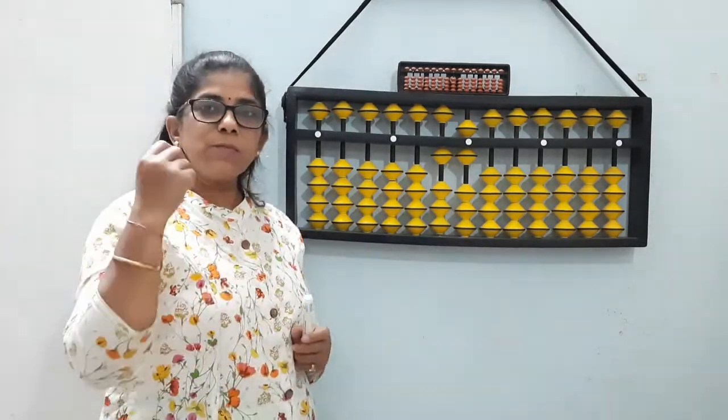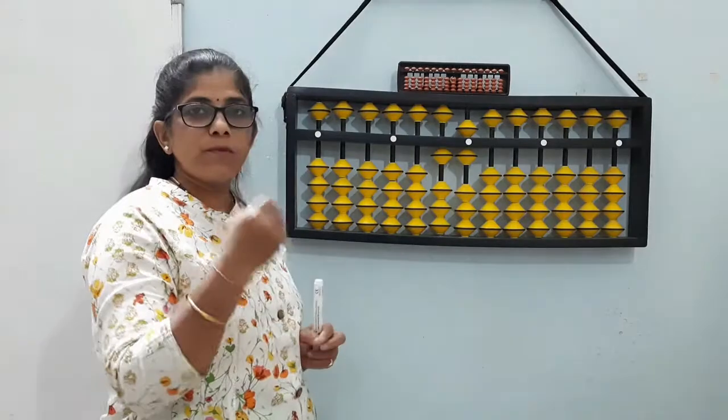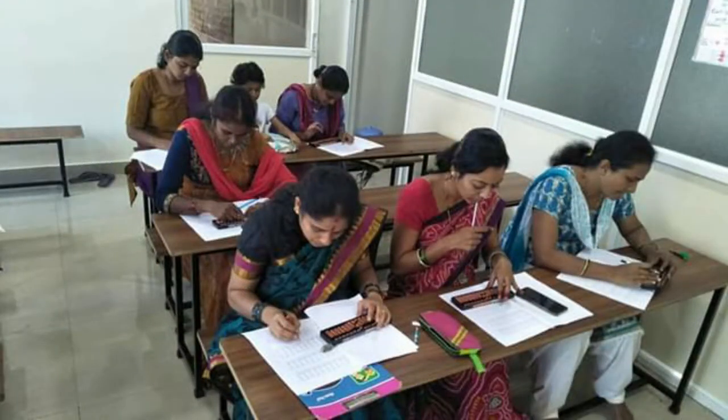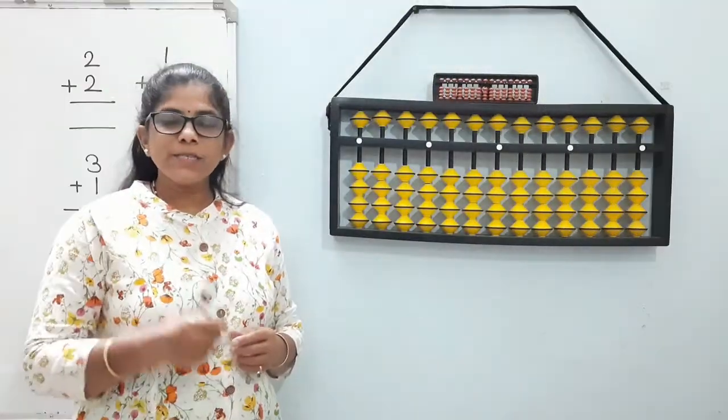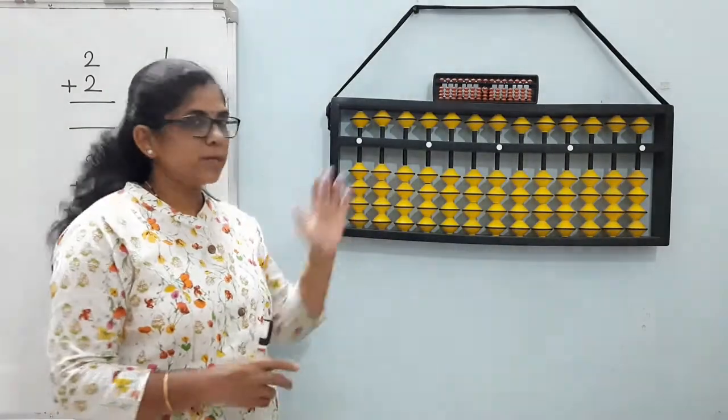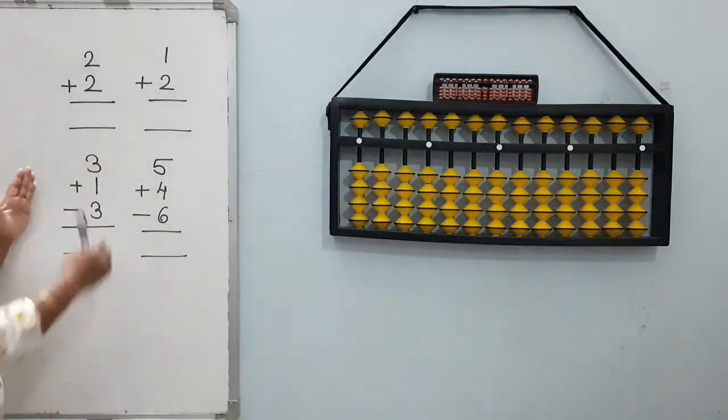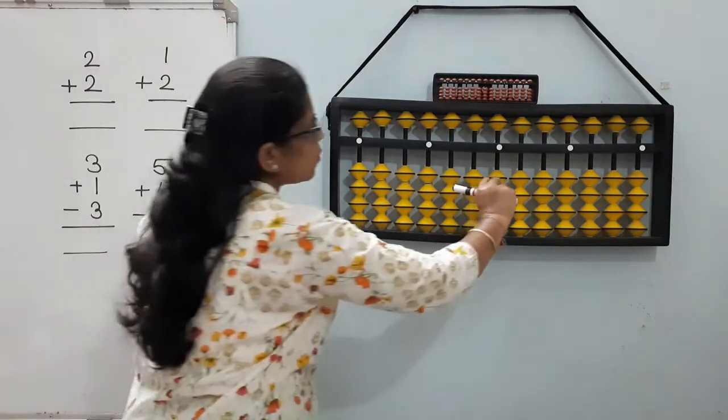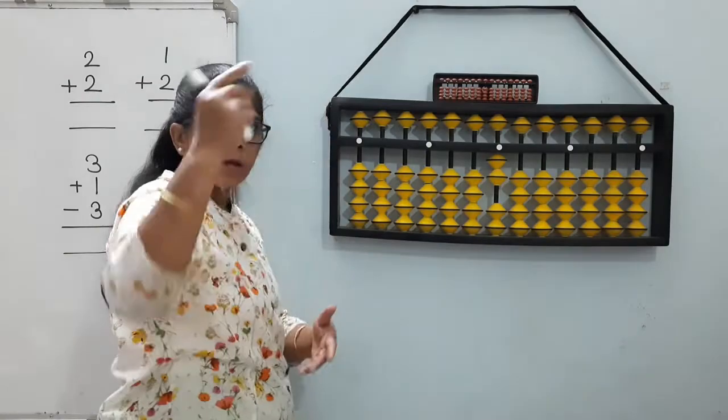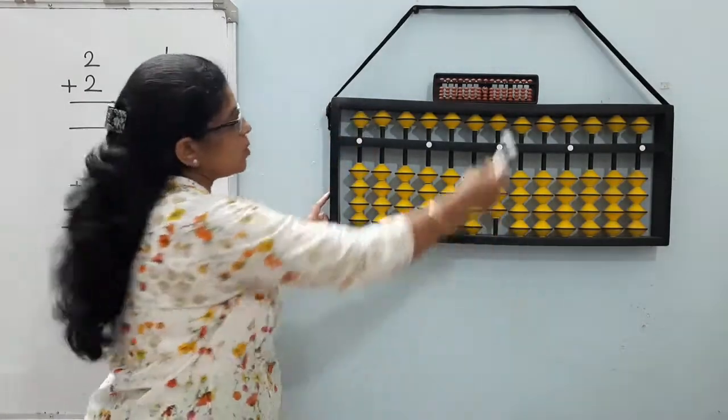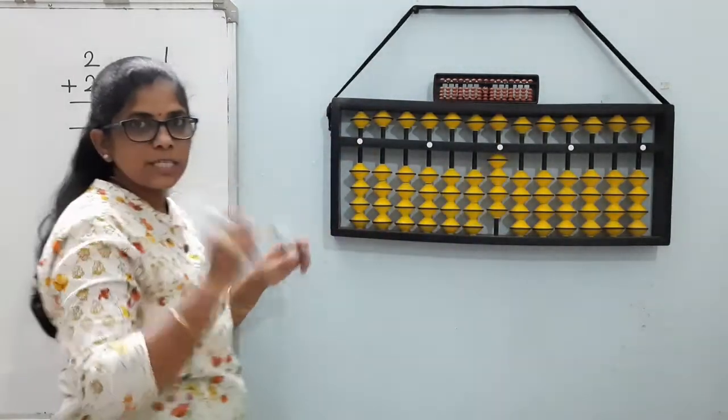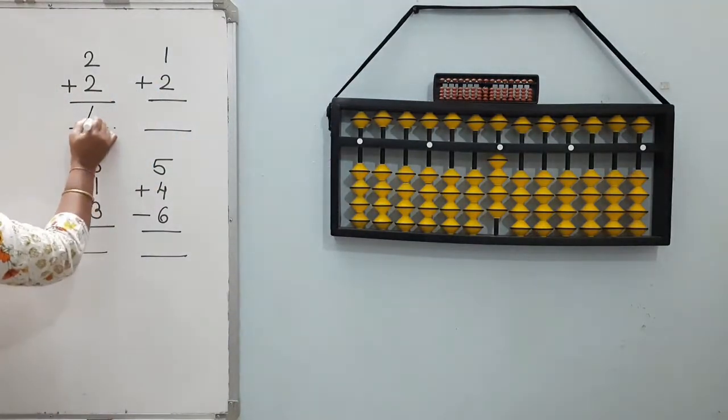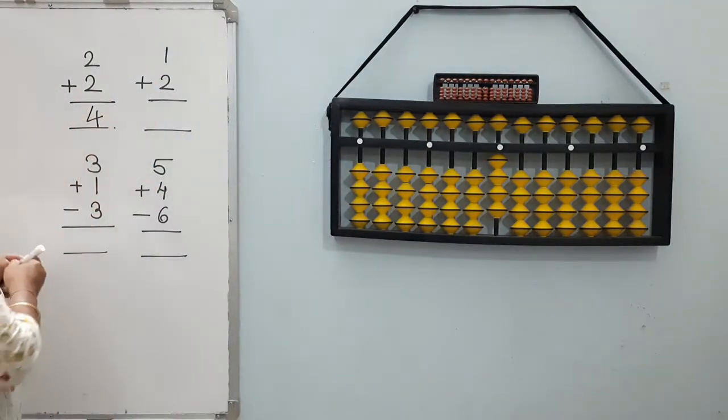Now let us see few simple examples. Let us solve few simple examples on the abacus. Here I have written 4 simple sums on the board. 2 plus 2. What we have to do here? 2 plus 2. Let us move 2 more beads. Now what is the answer on this abacus? It is 4. So answer is 4 here.